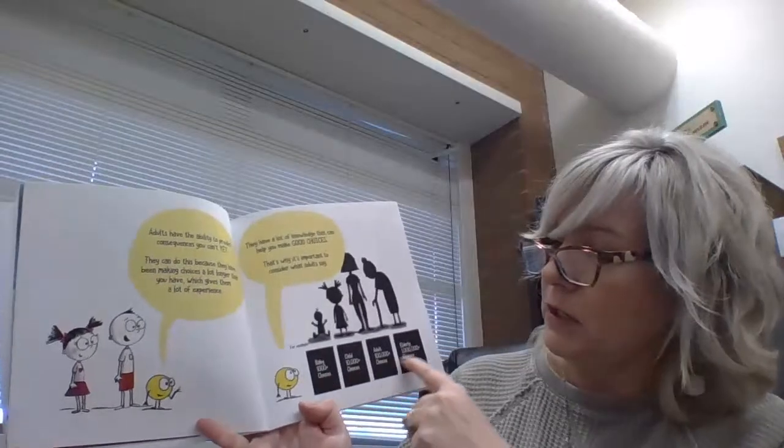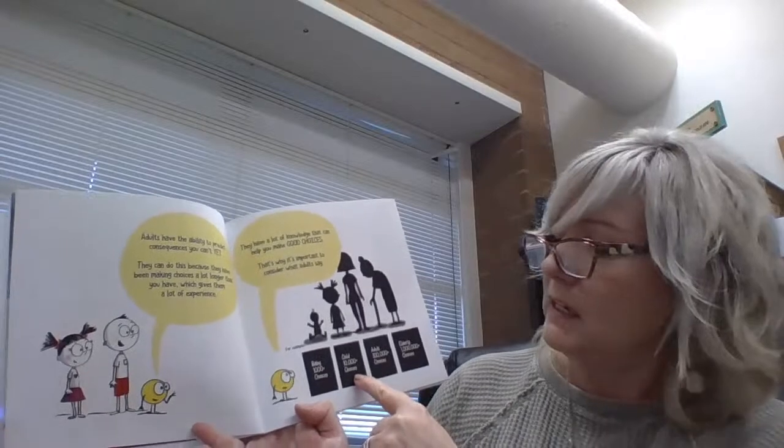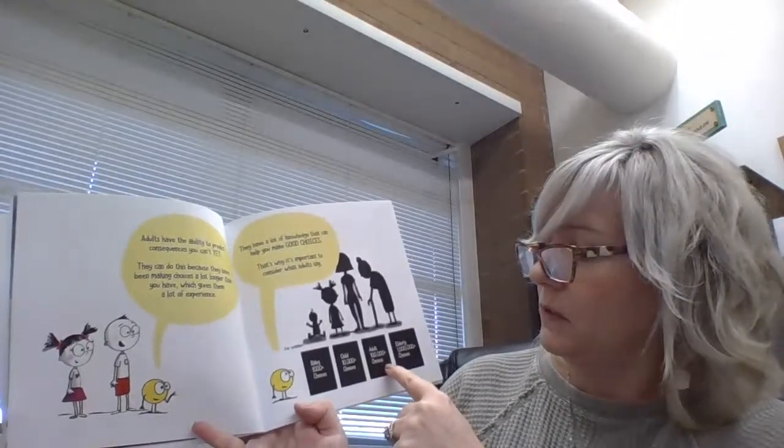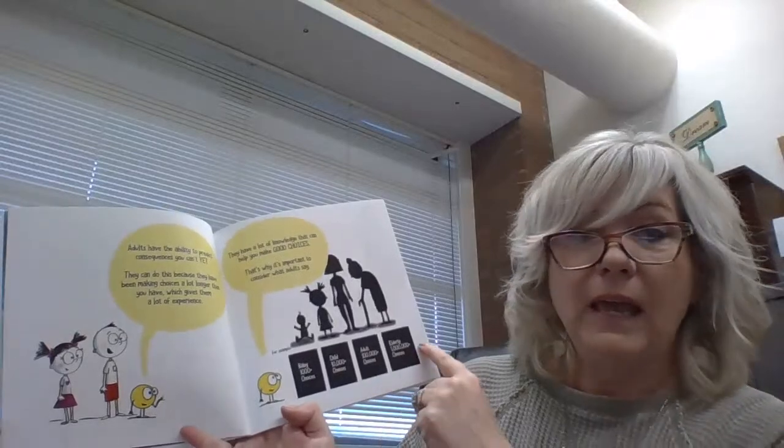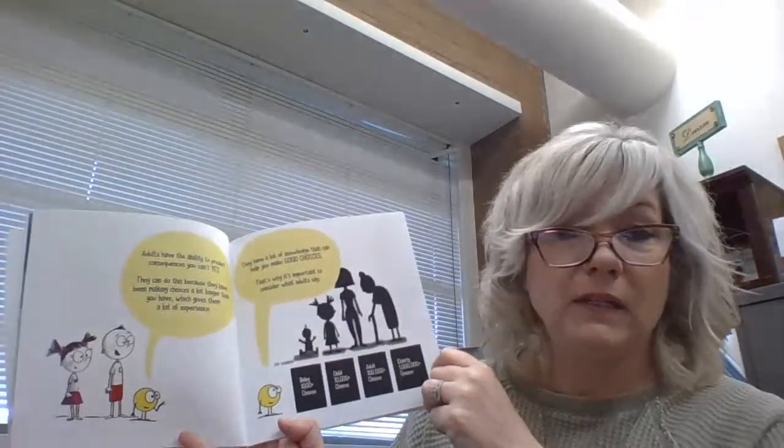So if you look at my chart down here, it says babies, a thousand plus choices. A child, 10,000 plus choices. Adults have made over a hundred thousand choices. And the elderly, like grandparents, have made over a million choices in their lifetime.